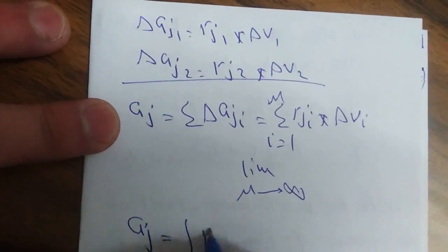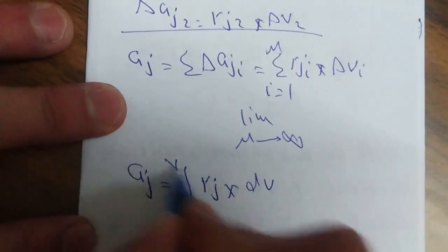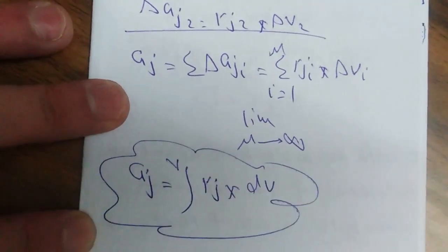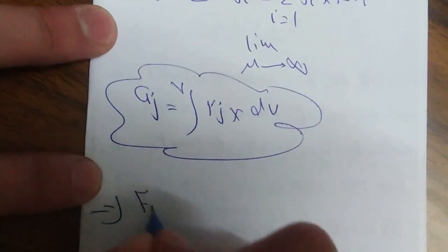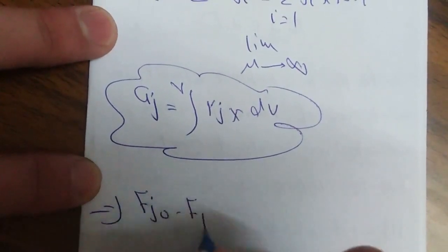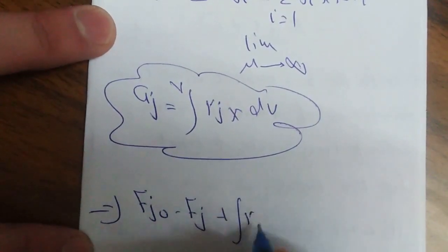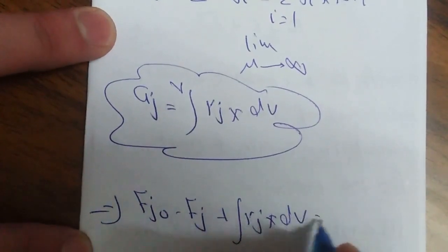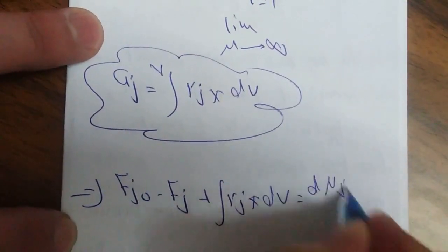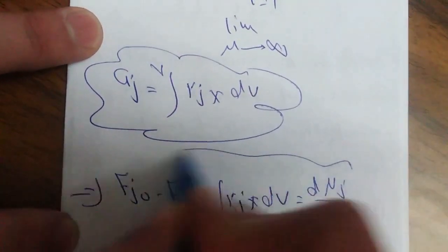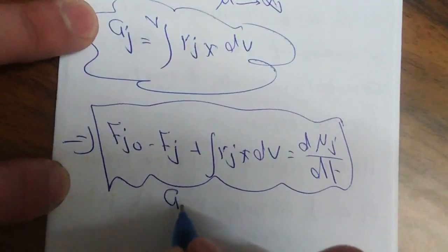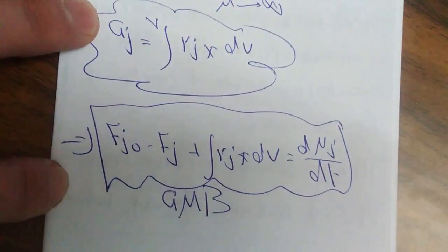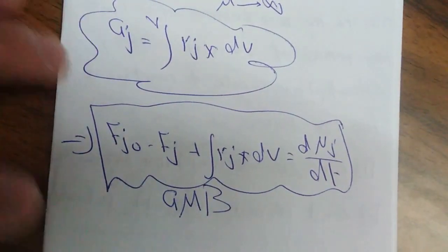فلو أخدت limit للـ summation when m goes to infinity، فبلاحظ أن generation term رح يساوي integration لـ r_j dV. هاي المعادلة بحطها في general balance equation، فبتطلع عندي: F_j0 minus F_j plus integration r_j dV تساوي dN/dT.